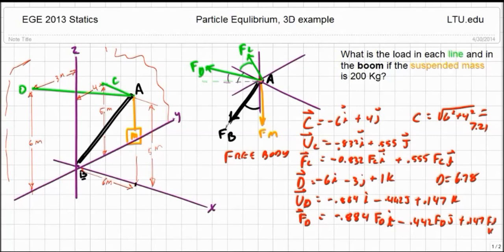Going through the same process for the force in the B direction, I come up with my force of B equals minus 0.768 F B I minus 0.640 F B J.